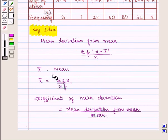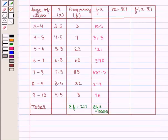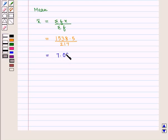From the key idea, the mean x̄ is given by summation of f×x upon summation of f. The summation of f is equal to 217, and the summation of f×x is equal to 1538.5. Therefore, mean x̄ = 1538.5 ÷ 217 = 7.09.